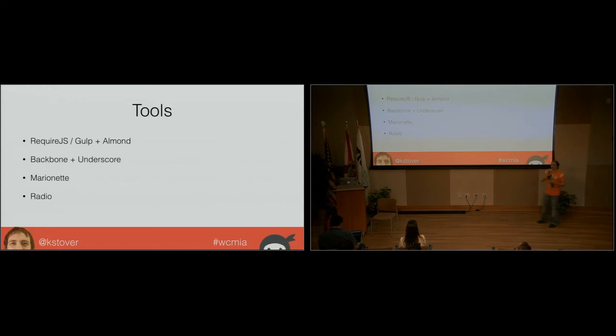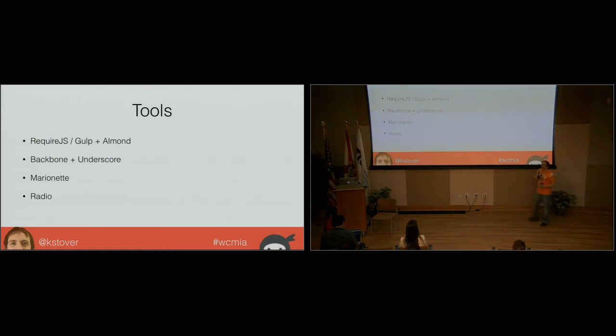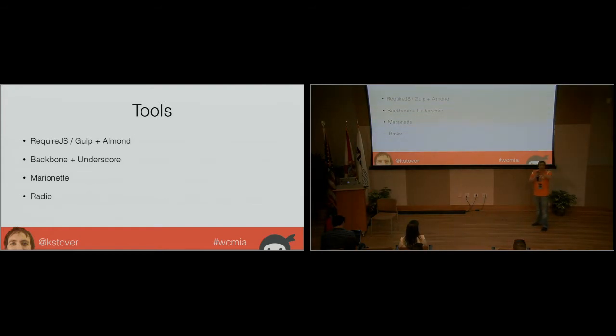Marionette makes it easy to build complex UIs — you just say here's my child view, create a collection view, pass it your collection, and it calls that child view for everything in the collection. It also gives you layout views. This entire screen is a view chopped up into smaller views — the menu bar is a view, each menu item is a view, the title is a view, the controls are a view. And finally there's Backbone Radio, which lets your modules communicate with each other via a pub-sub message bus.